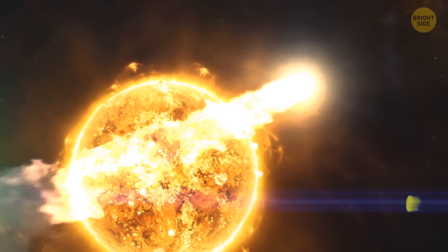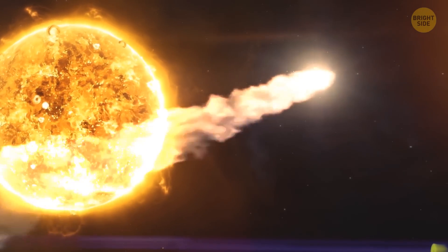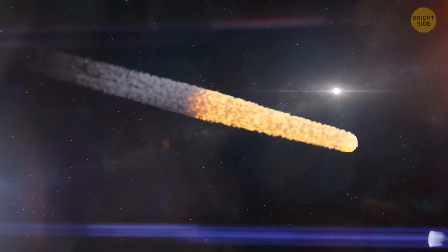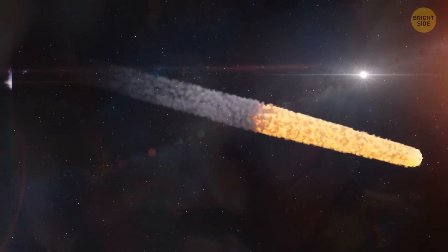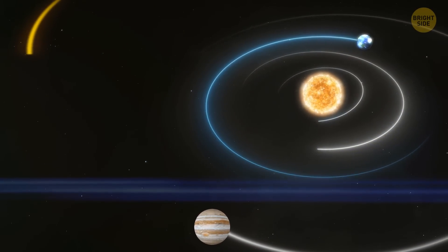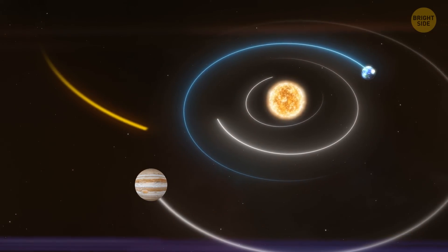When a comet approaches the sun, the heat causes the ice to vaporize, releasing gas and dust particles into space. This creates a bright glowing tail that can extend for millions of miles. Comets generally have elliptical orbits, often taking them from the distant reaches of our solar system closer to the sun.